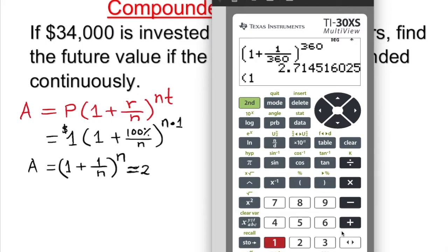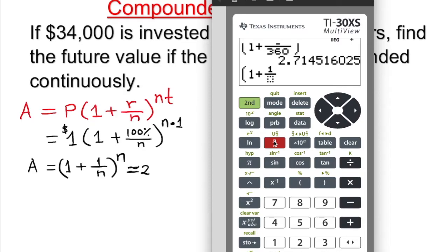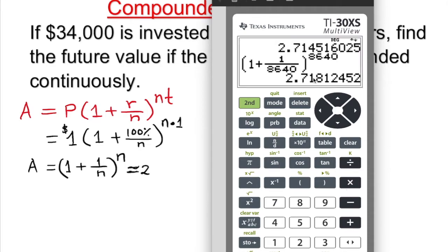So open parenthesis, 1 plus 1 over. This time, I'm going to go with compounding every hour. I'll take a big number here. Maybe if I look into every hour, I can put down 8640. 8640 is my n and go to the right, close parenthesis, n to the power, same n, 8640. Look what is happening here. It's almost.